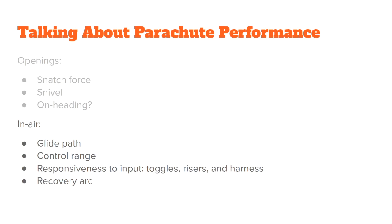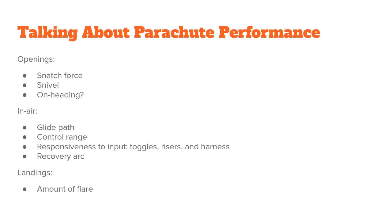We also consider the recovery arc — whenever you give some sort of input, say a toggle turn, how quickly does the parachute come out of that turn and go back to normal flight? Some parachutes have a very short recovery arc. Others like to stay in the dive for longer, so they have a longer recovery arc. And then finally, what most people really focus on is landing: how much flare can you get out of this parachute, and is it known for doing better with a single-stage flare versus a two-stage flare?